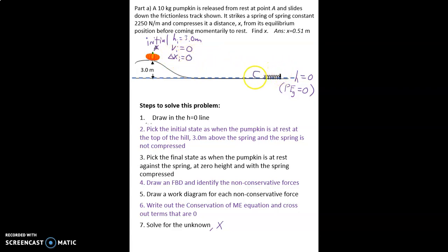Down here we're going to have our pumpkin sitting here and that's going to be our final state. Now we're going to say hf equals zero, vf equals zero and delta xf equals what we don't know.